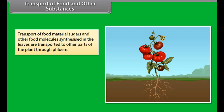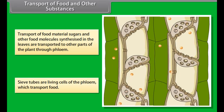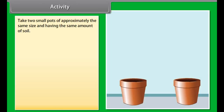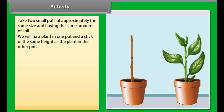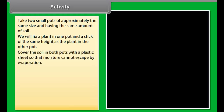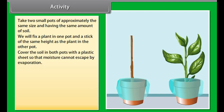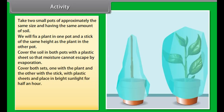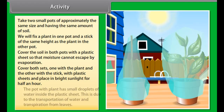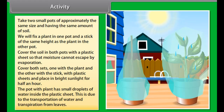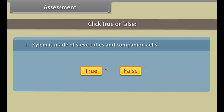Transport of food and other substances: Sugars and other food molecules synthesized in the leaves are transported to other parts of the plant through phloem. Sieve tubes are living cells of the phloem which transport food. Activity: Take two small pots of the same size with the same amount of soil. Fix a plant in one pot and a stick of the same height in the other. Cover the soil in both pots with a plastic sheet to prevent evaporation, then cover both sets with plastic sheets and place in bright sunlight for half an hour. The pot with the plant will show small droplets of water inside the plastic sheet, due to transportation of water and transpiration from the leaves.